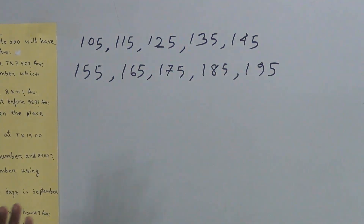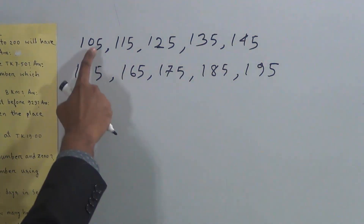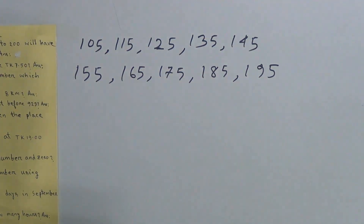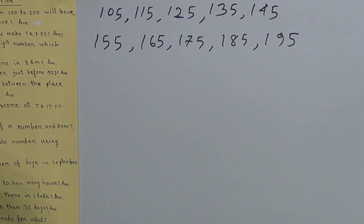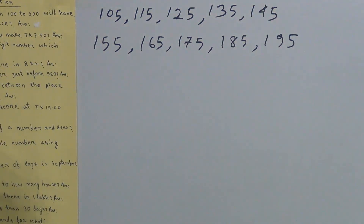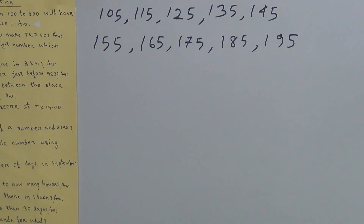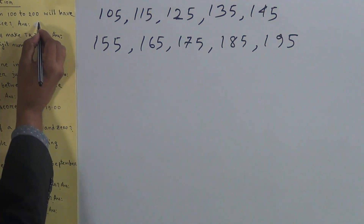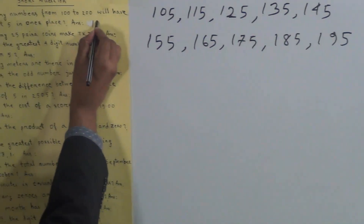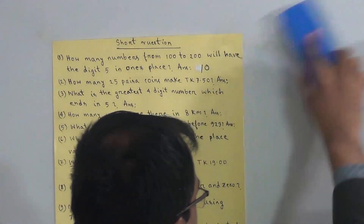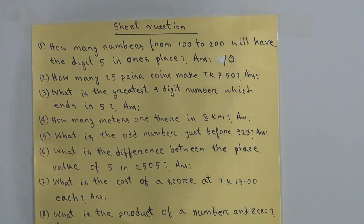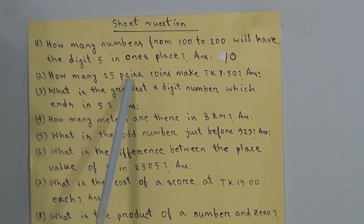These numbers have total — one, two, three, four, five, six, seven, eight, nine, ten — 10 numbers. All these numbers have 5 in the ones place and are greater than 100 and less than 200. So the answer to question 1 is 10. Total 10 numbers from 100 to 200 have the digit 5 in the ones place.